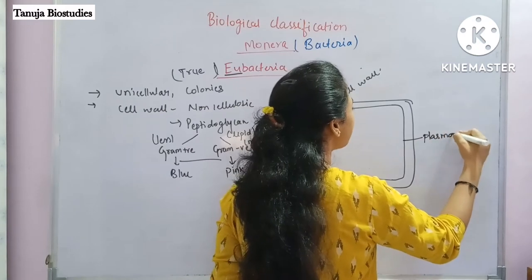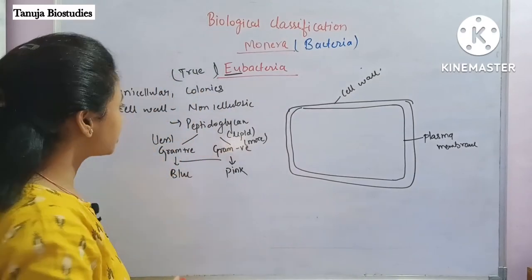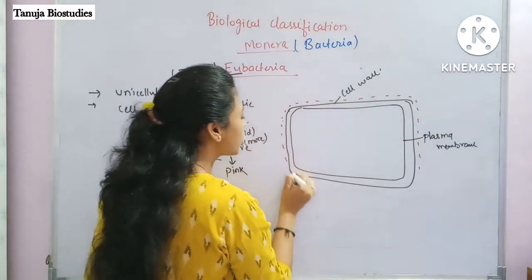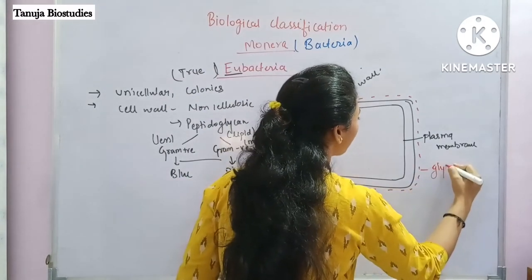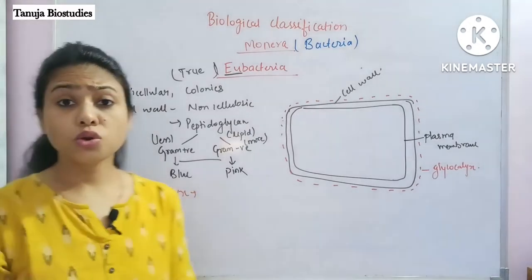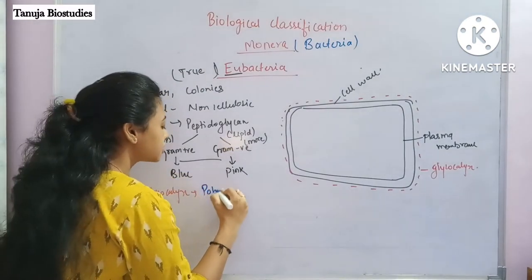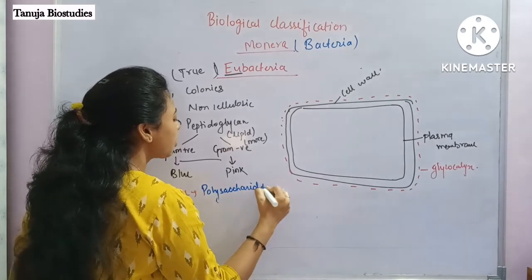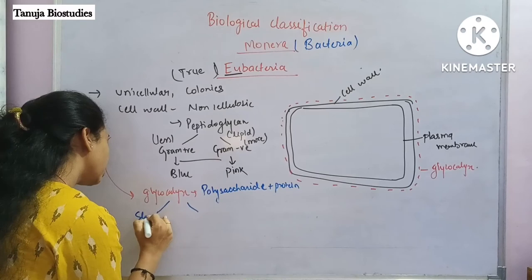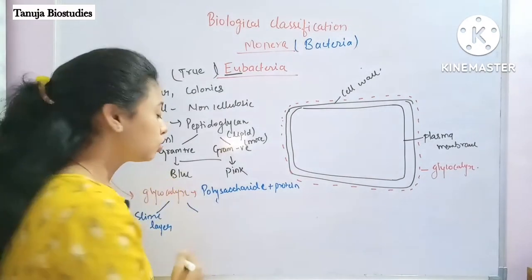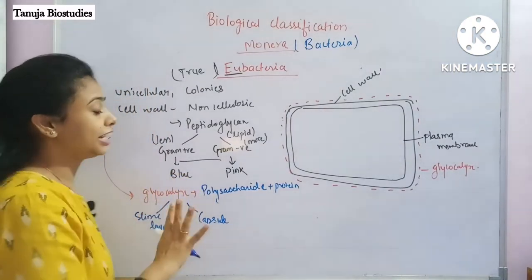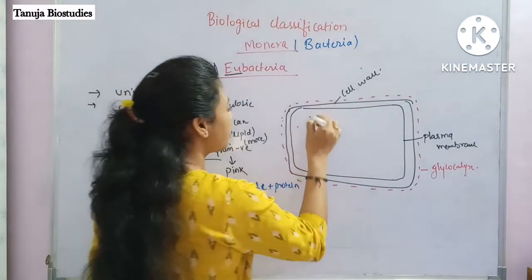Below the cell wall is the plasma membrane. There is also another structure in the cell envelope called the glycocalyx, which is outside the cell wall. It is made up of polysaccharides and some proteins. If the glycocalyx is loosely bound, it is called a slime layer; if it is very tightly bound, it forms a capsule.